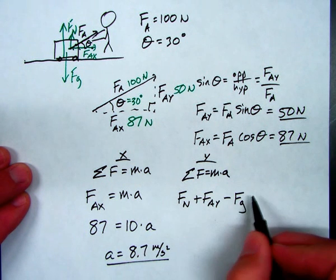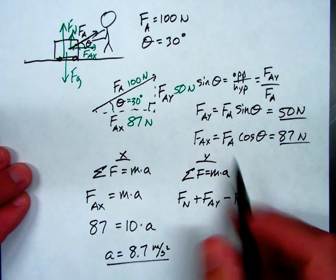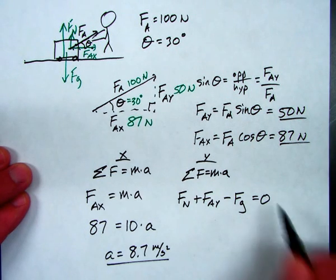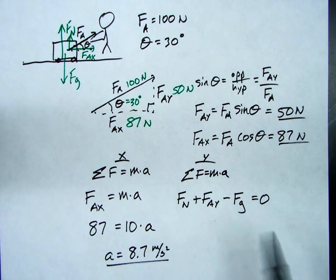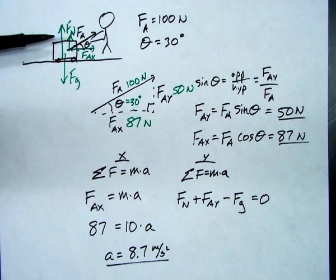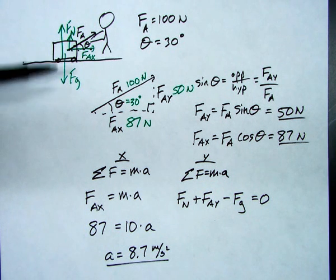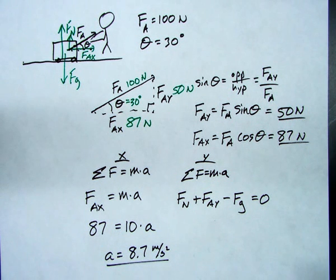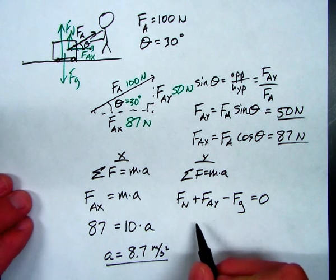Now, mass times acceleration. The block is not accelerating up or down, so I can say this is 0. Now, if I needed to find the normal force, notice in this problem the normal force is not equal to the force of gravity because there is an additional vertical component of the applied force. If I needed to find the normal force, let's go ahead and do that.